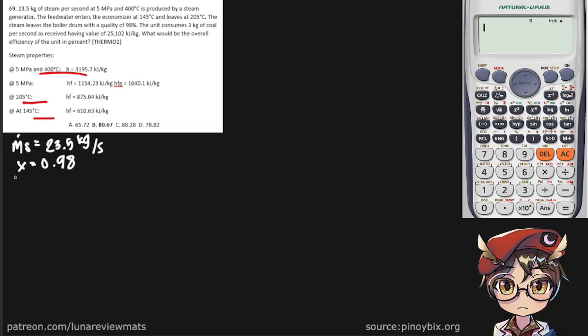So 3 kg sounds like our fuel consumption rate. And this one is our higher heating value, which we will assign as q sub h, 2 kJ per kg.